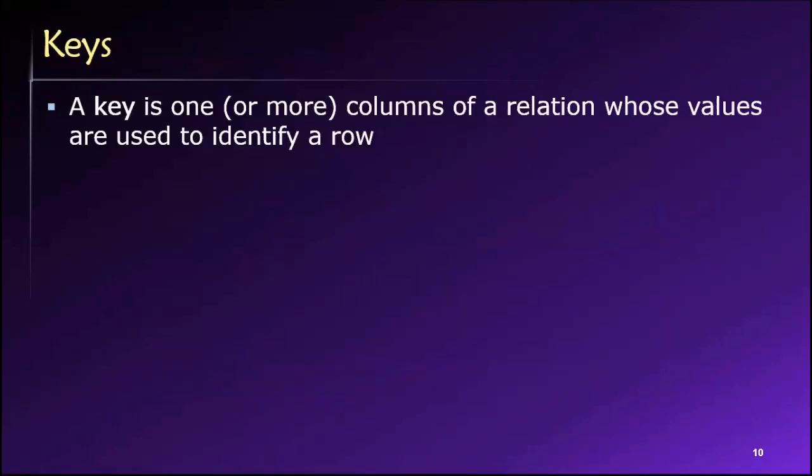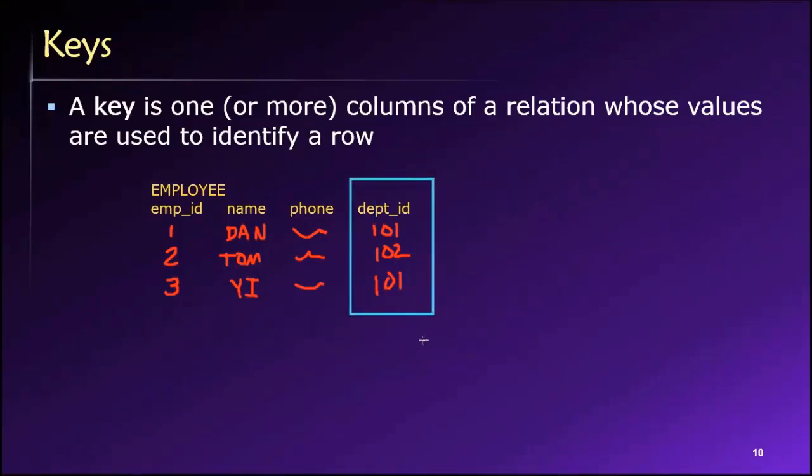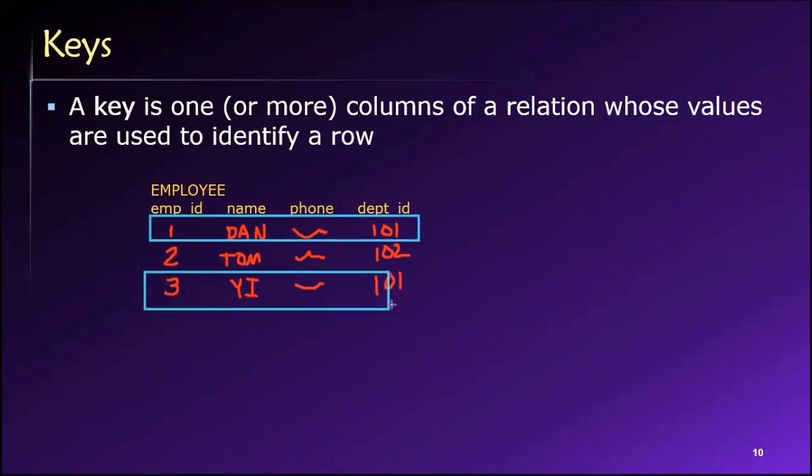So for example, this employee table that I was referring to previously. Now we can see that department ID is a non-unique key because it allows repeating values and hence gives us the ability to identify a set of rows. Like in this case, I can identify the set of employees that work in department number 101.